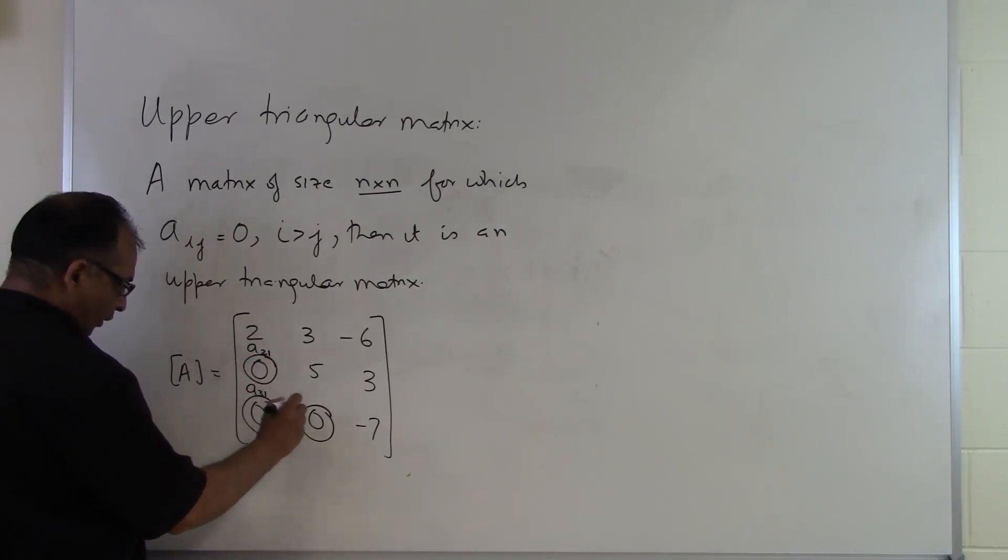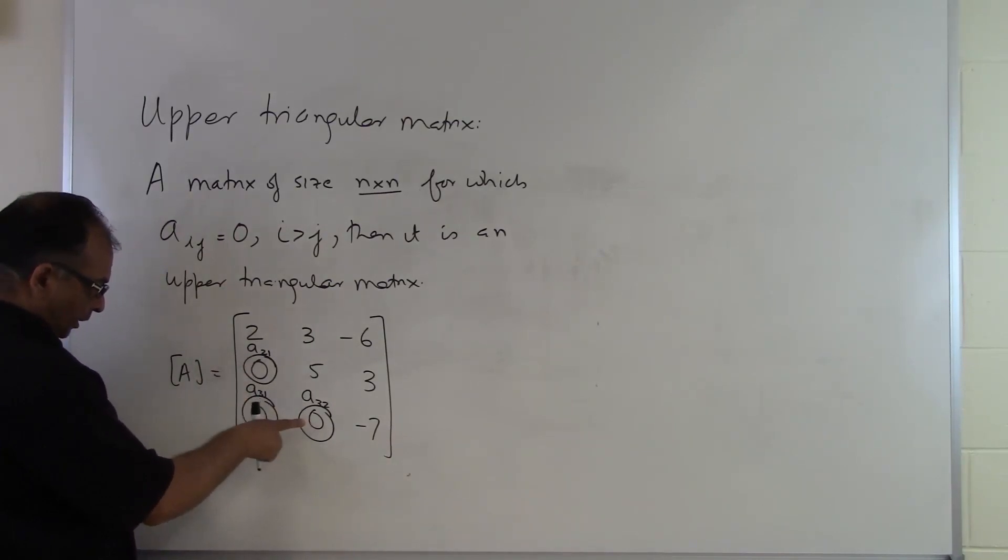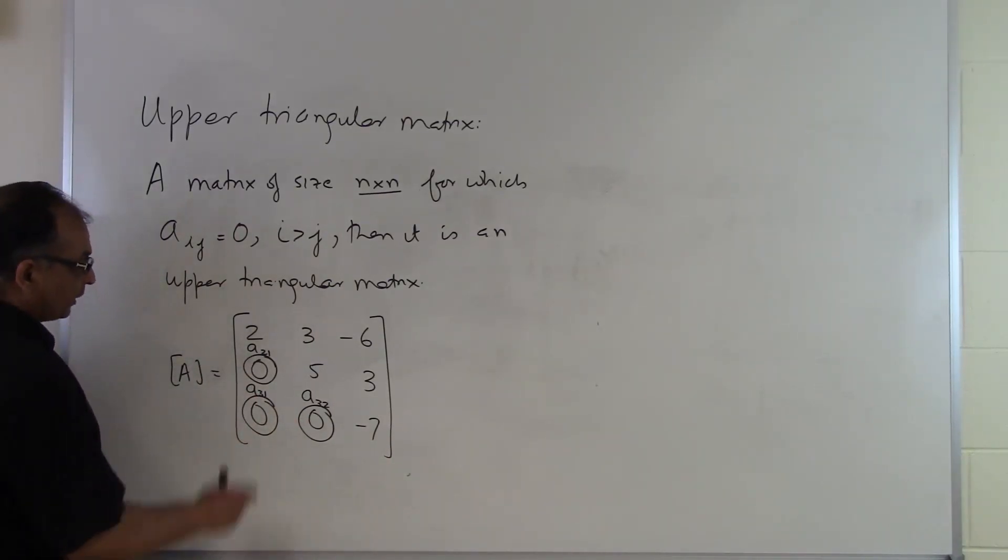This is third row, first column. This is third row, second column. And you will see something common in these zero elements is that the row number is always bigger than the column number. And that is what we mean by i being greater than j.